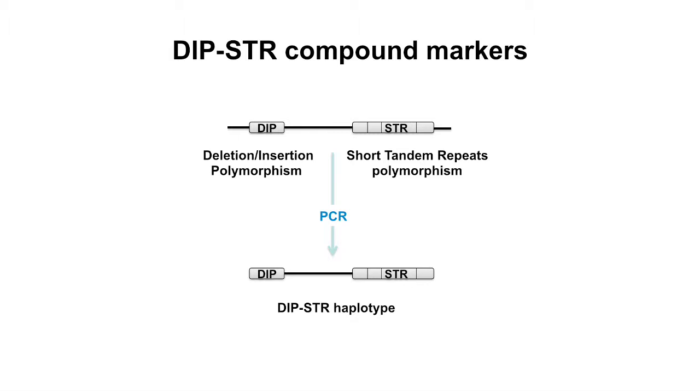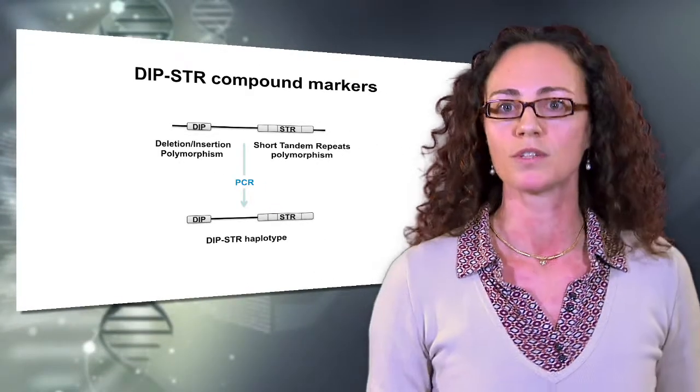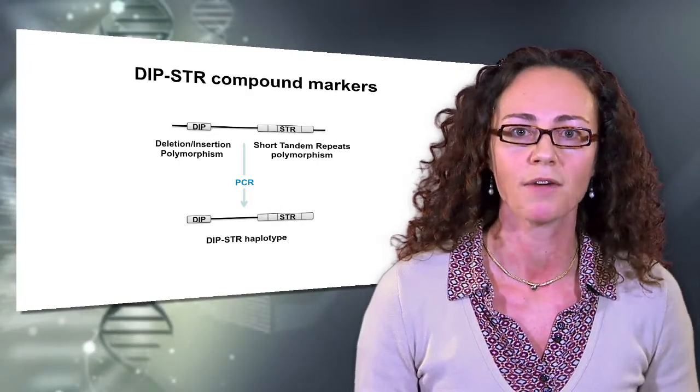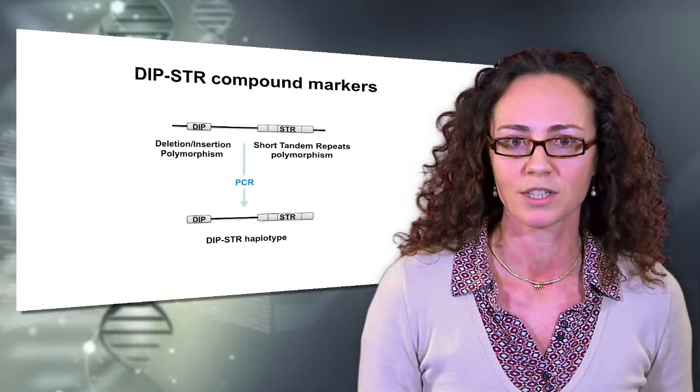In this article, we provide a novel type of genetic marker that we name DIP-STR. This marker is a compound marker which is formed of a deletion insertion polymorphism linked physically close to an STR polymorphism. The combined analysis of these two polymorphisms identified DIP-STR haplotypes highly variable of about 300 base pairs.